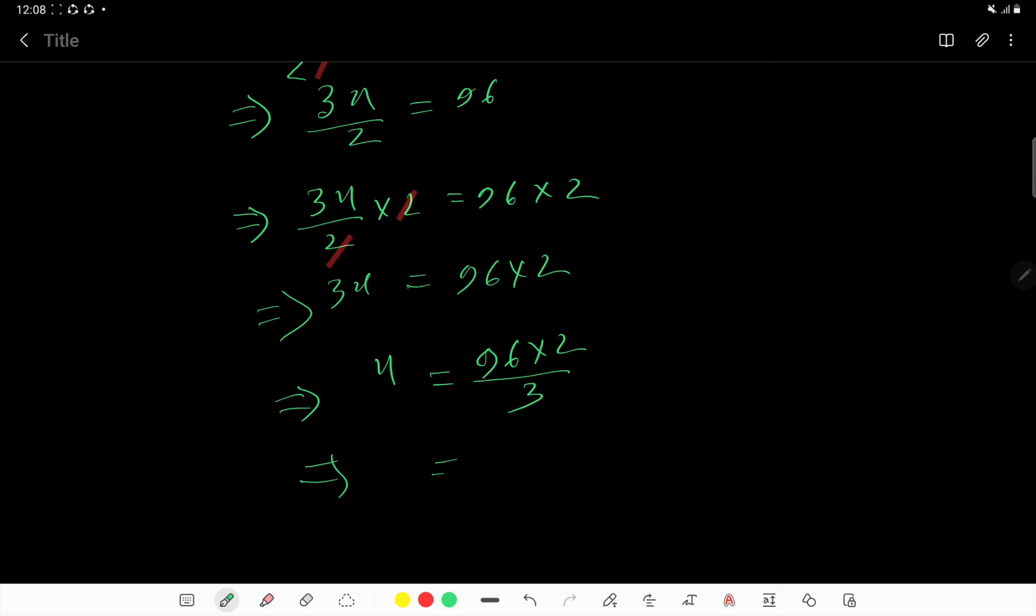Now solve. If you divide this 3 by 3, then we will get 1. And if you divide this 9 by 3, you will get 3. And if you divide this 6 by 3, then we will get 2. So x equals 32 times 2, that is 64.